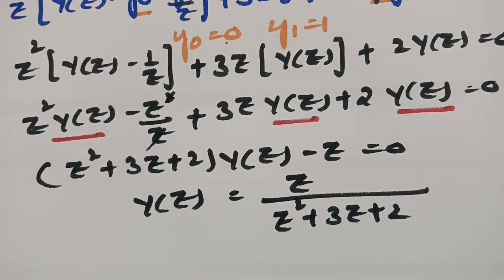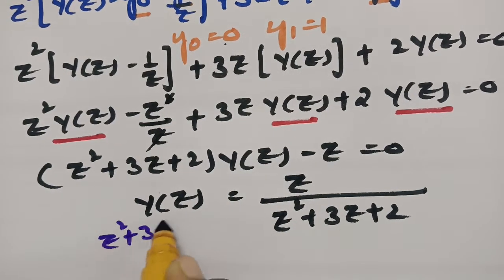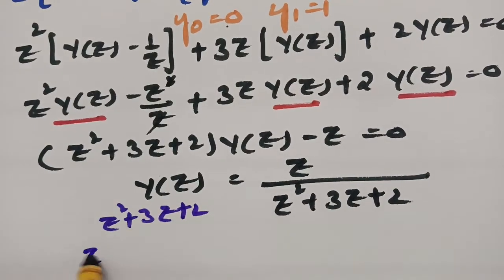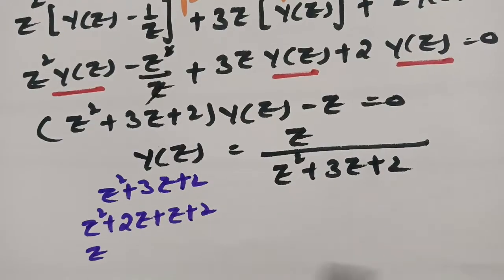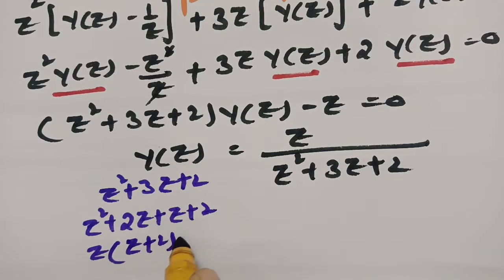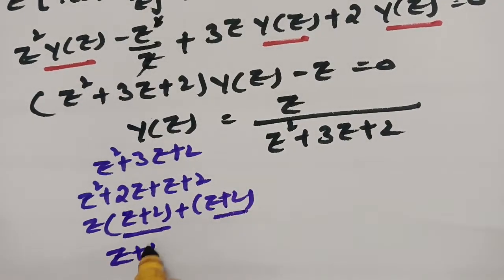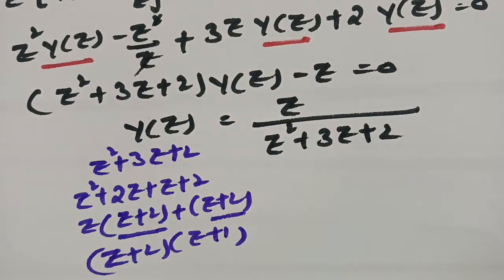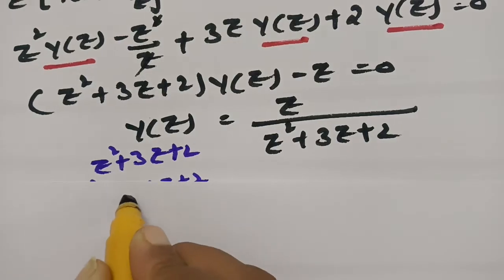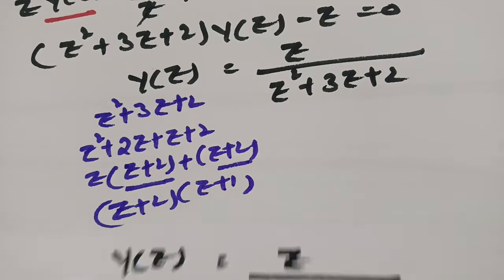We need to split the denominator. Z² + 3Z + 2 can be written as Z² + 2Z + Z + 2. Taking Z common from the first two terms gives Z(Z+2), and from the last two gives 1(Z+2). So the factors are (Z+2)(Z+1). Therefore Y(z) equals Z divided by (Z+1)(Z+2).